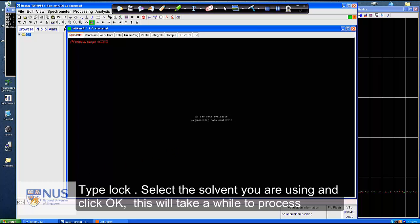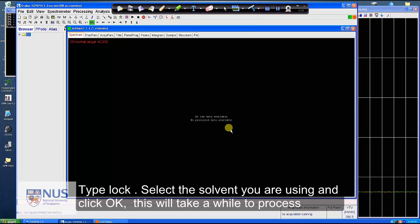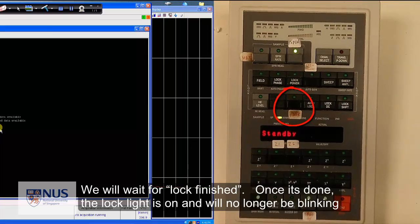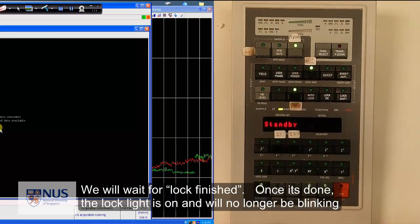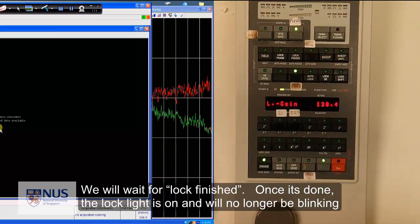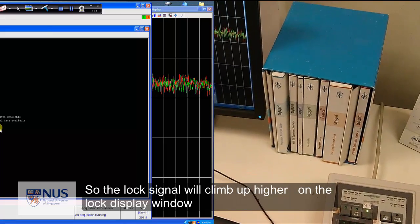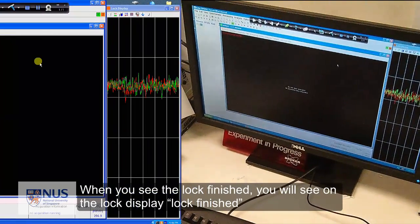Type lock, L-O-C-K, to select the solvent you are using and click OK. This will take a while to process. We will wait for lock finished. Once it's done, the lock light is on and will no longer be blinking. The lock signal will climb up higher on the lock display window. When you see lock finished, it is time to do shimming.